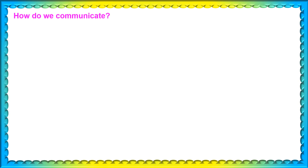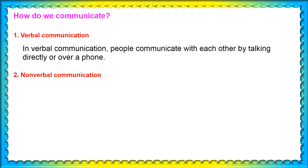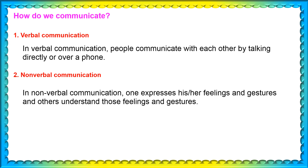How do we communicate? We communicate in two types. One is verbal communication. Another one is non-verbal communication. In verbal communication, people communicate with each other by talking directly or over a phone. In non-verbal communication, one expresses his or her feelings and pictures and others understand those feelings and pictures.